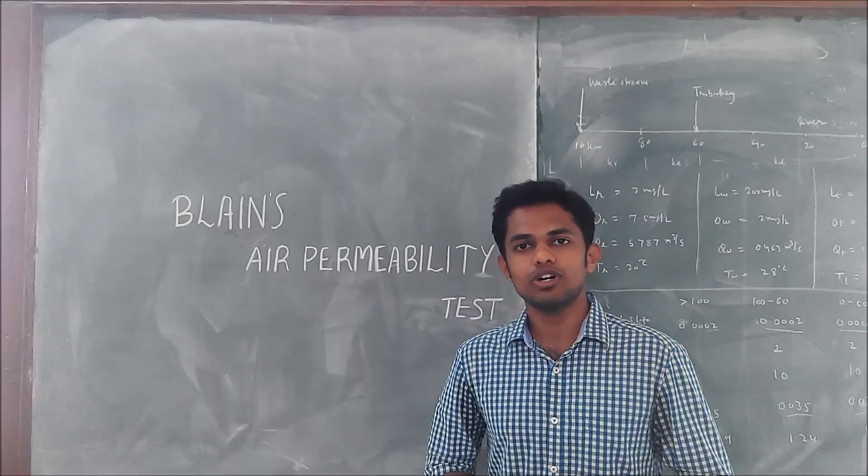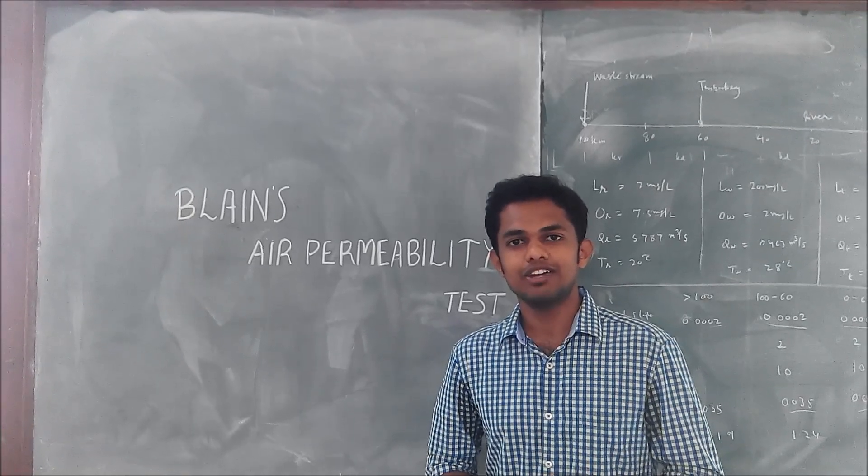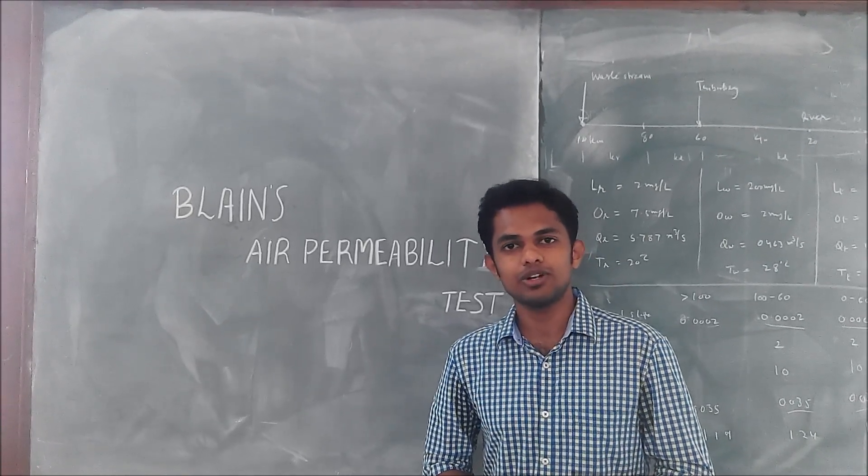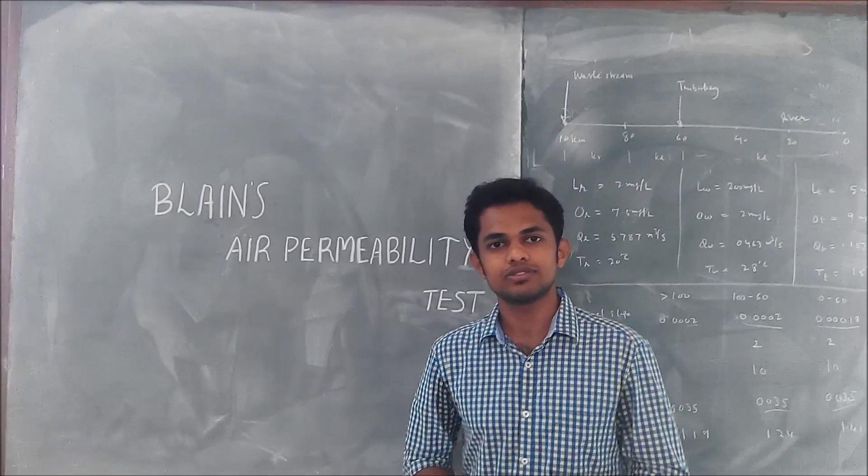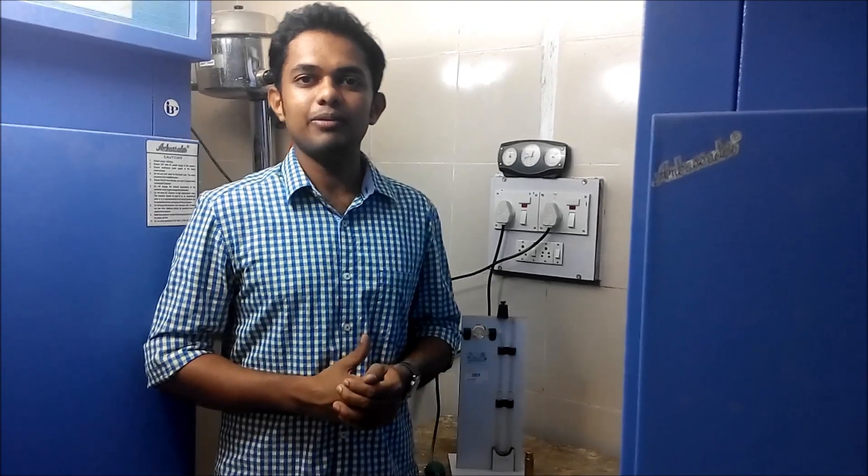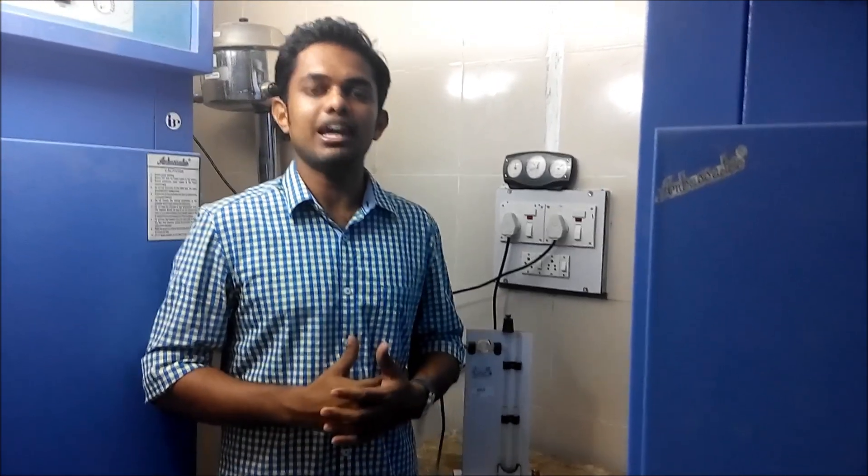There are two methods to find the fineness of cement. One is by IS4 method and which is by sieving through 90 micron ISM. And second method is by Blaine's air permeability apparatus. The most scientific and accurate method to find the fineness of cement is by Blaine's air permeability apparatus.